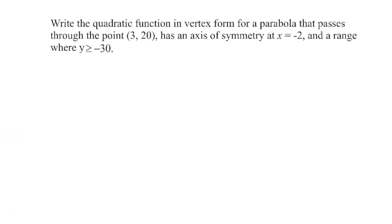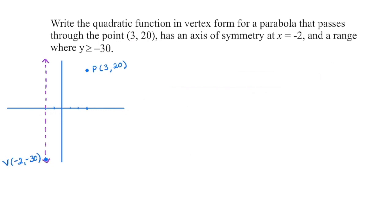Whenever you're given a problem involving functions, always try to draw a sketch and lay out as much information as you have. In this case, we have a parabola passing through a given point, we're told the axis of symmetry, and we're given the range. The axis of symmetry crosses the x-axis at negative 2. The parabola passes through the given point — approximately plotted. The range where y is greater than or equal to negative 30 tells us this is our minimum, so the parabola opens up. The vertex lies on that axis of symmetry, so we know both coordinates of the vertex.